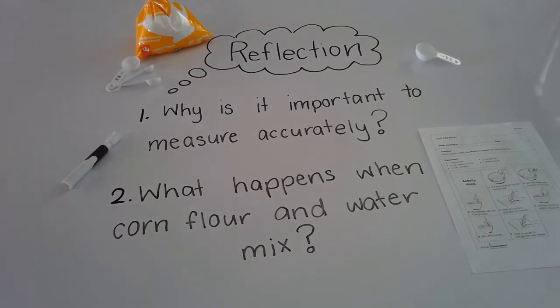Okay. So the first question for your reflection is, why is it important to measure accurately? Now, accurately is the key word there. Why is it important to measure it accurately? And the second question is, what happens when corn flour and water mix? So that was actually the experiment. What actually does happen when we mix the corn flour and the water? And you could answer that in different stages. What happens when we add a little bit of water? And what happens when we add a lot of water? Thanks for joining us today. And we really hope you've had fun with this just add water science experiment for grade two all mixed up. We have fun. See you next time.